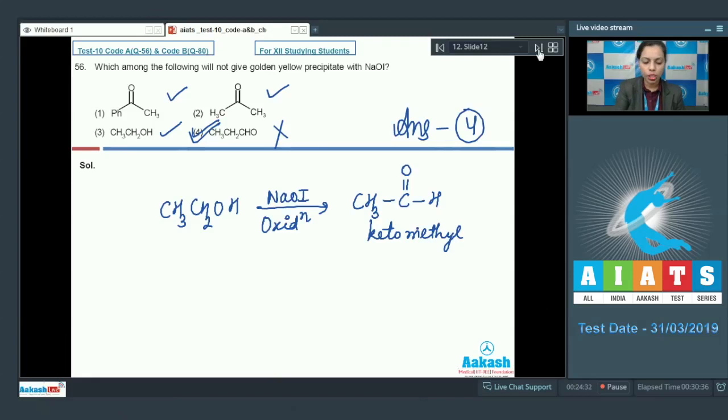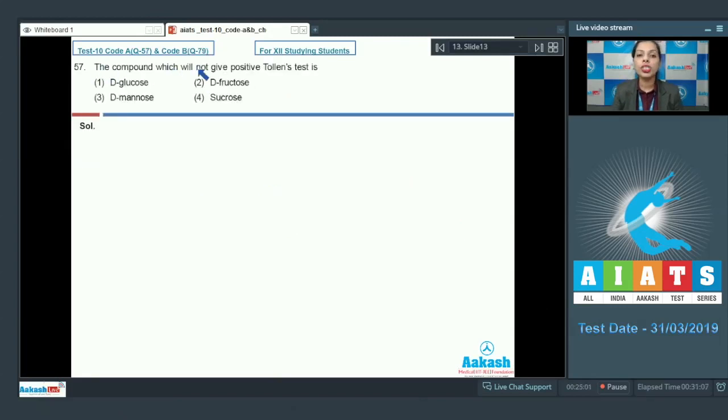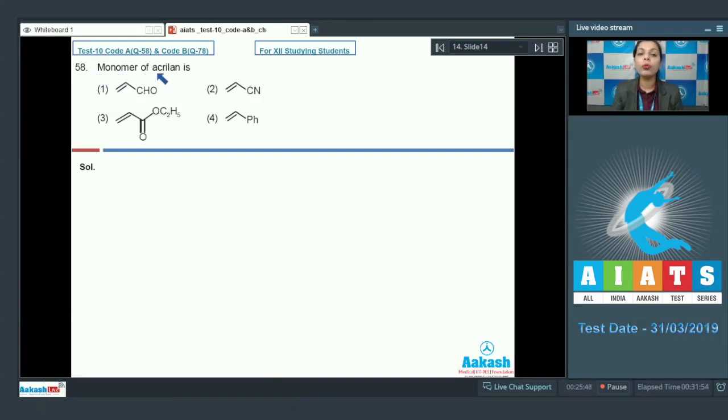Now after this we have the next question, question number 57: The compound which will not give positive Tollen's test. All the reducing sugars are giving this Tollen's test, but if I talk about sucrose, in case of sucrose OH group is not free - it is non-reducing sugar and that's why it does not give positive Tollen's test. While if I talk about D-glucose, D-fructose, or D-mannose, all of these are giving positive Tollen's test. So the correct option becomes option 4, sucrose.